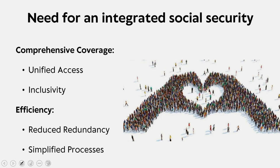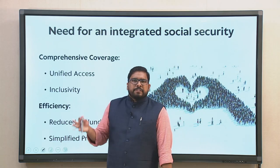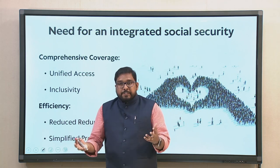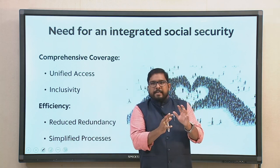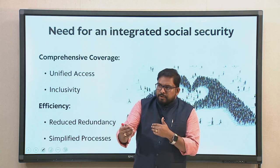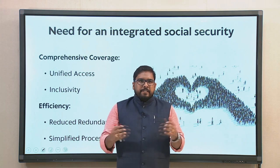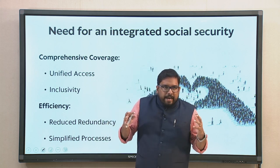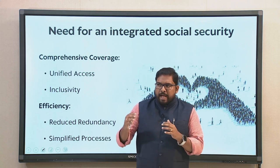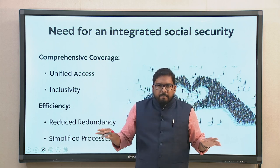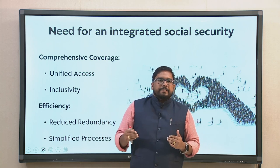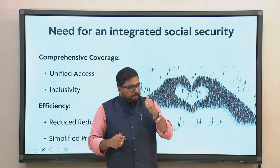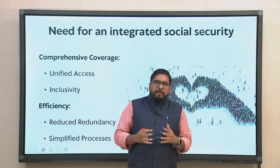We have to understand that we started with different schemes spread across different sectors and dimensions, targeting different sets of people in terms of usability and utilization. There is a typical need for an integrated social security scheme. We have different schemes scattered in different places and sectors, targeting different populations. But we need a comprehensive cover—an integrated social security scheme. This is the end of this module where we try to emphasize this need for comprehensive coverage with unified access and inclusivity.